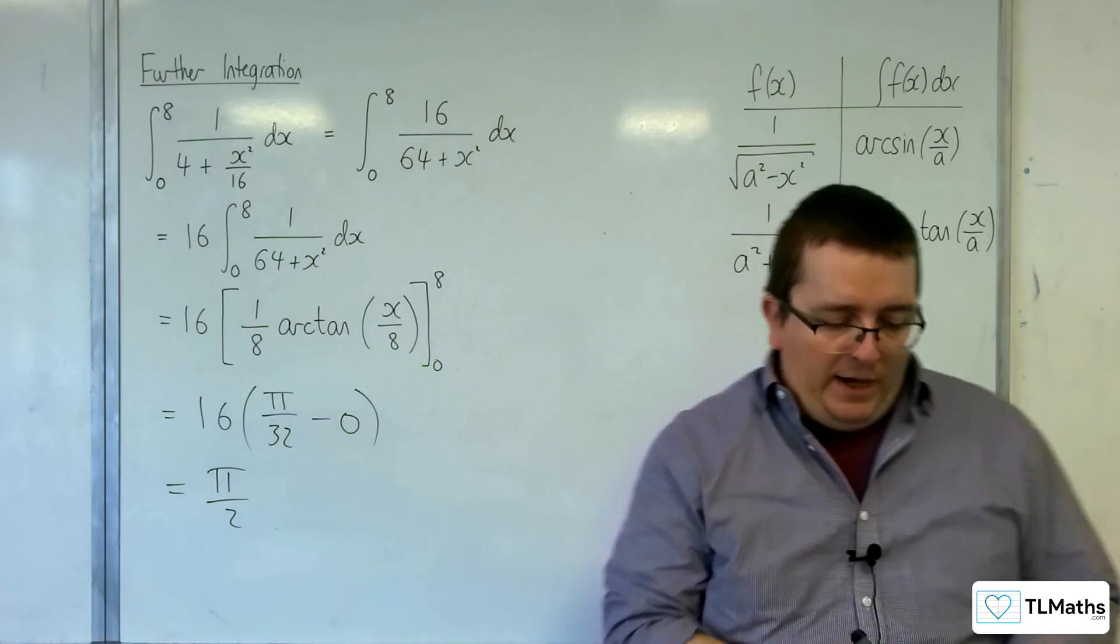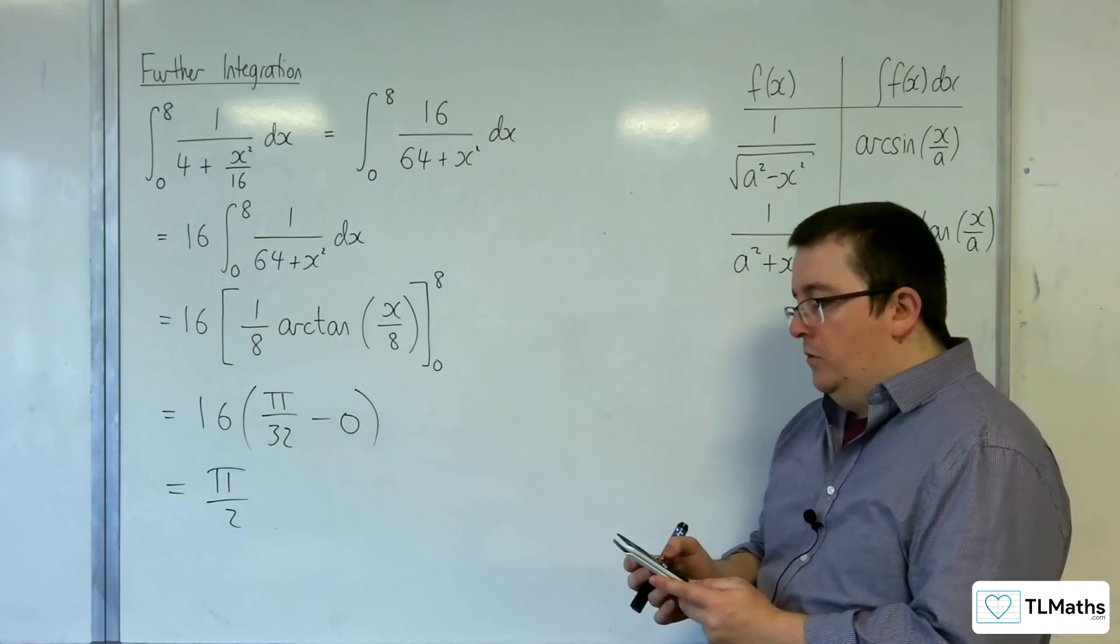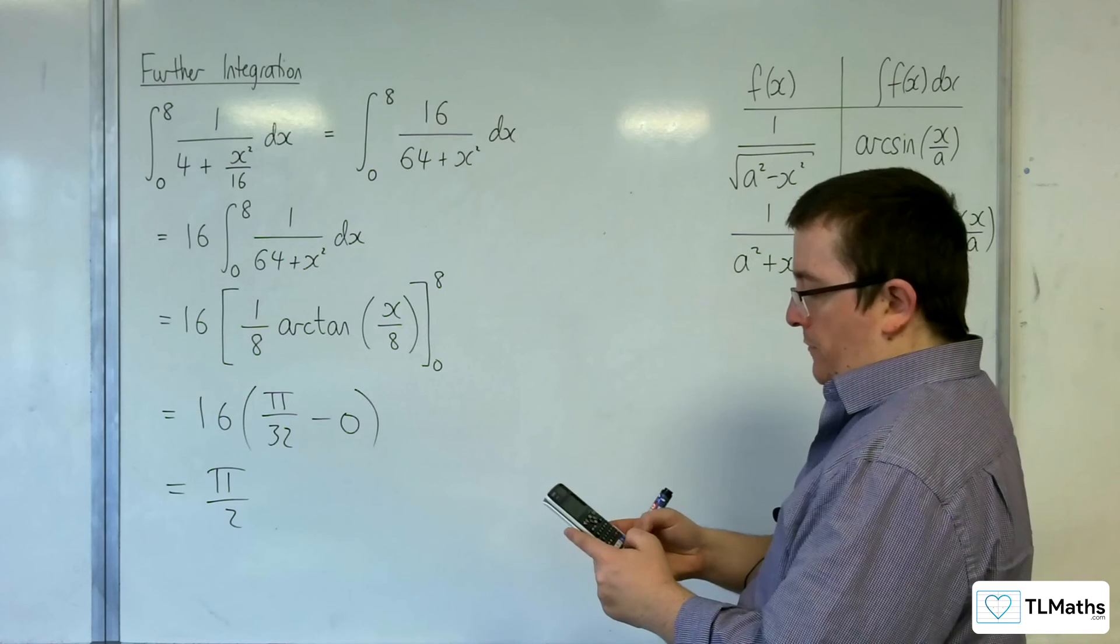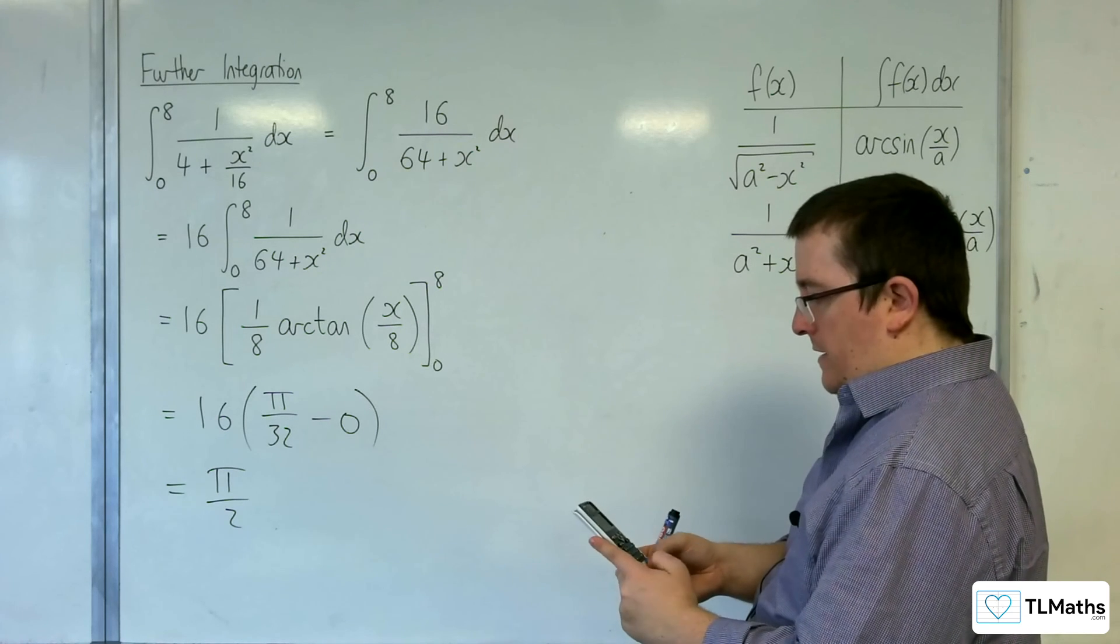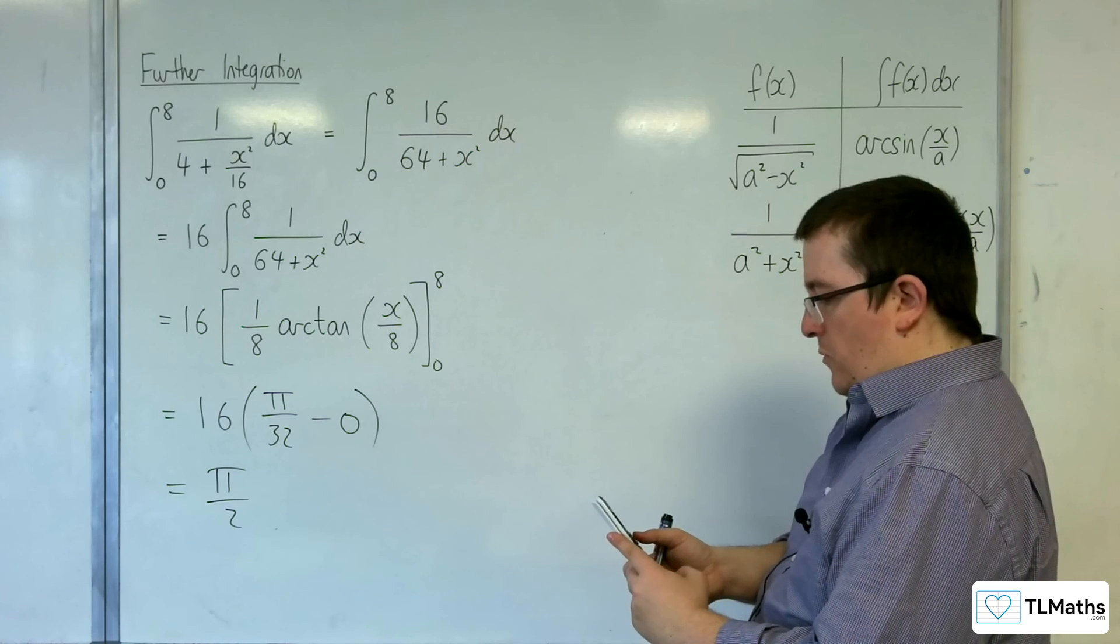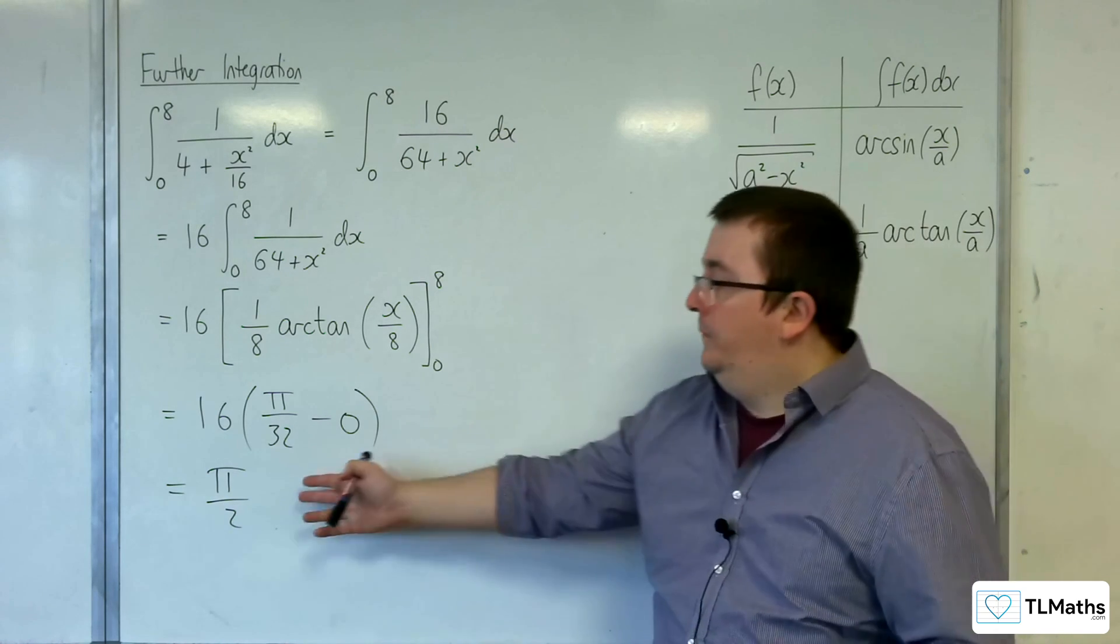And of course, you probably want to check that on your calculator using your integral button. So integral of 1 over 4 plus x squared over 16. Evaluate between 0 and 8. And we get the pi over 2. Yeah, so that's confirmed.